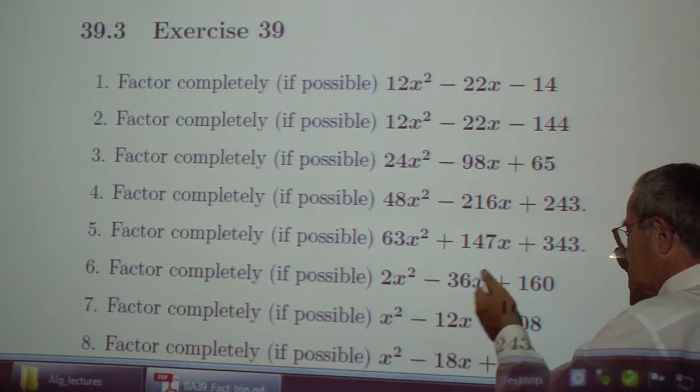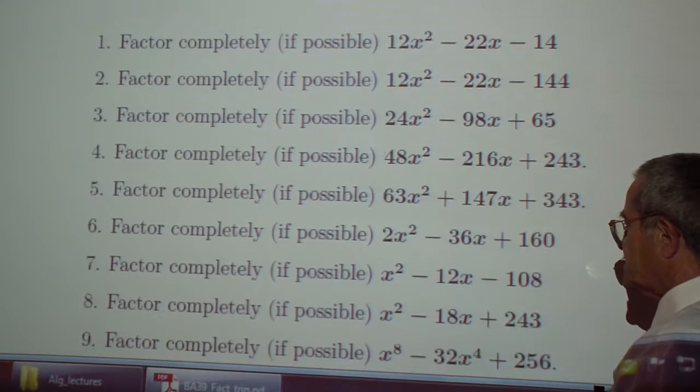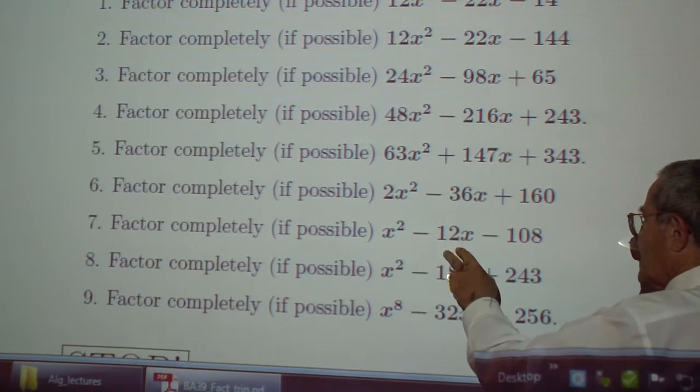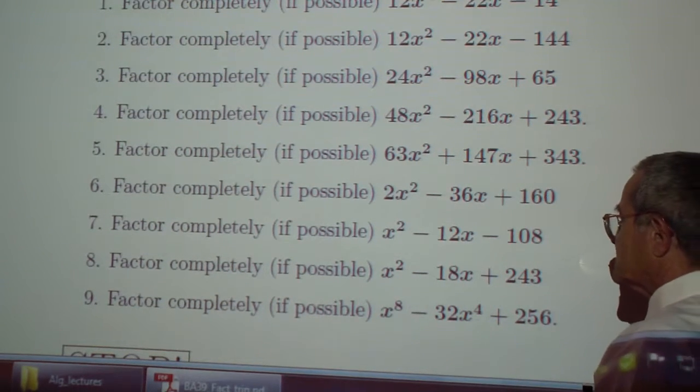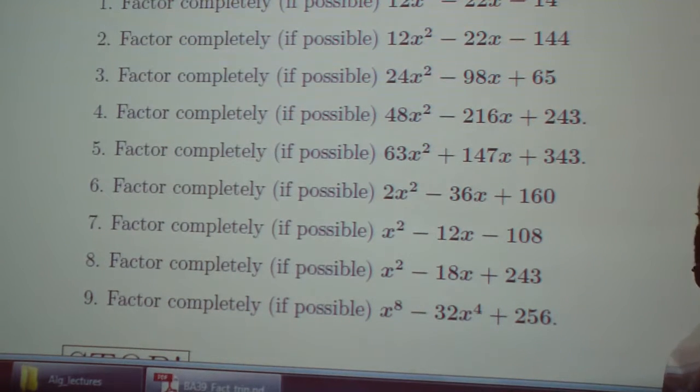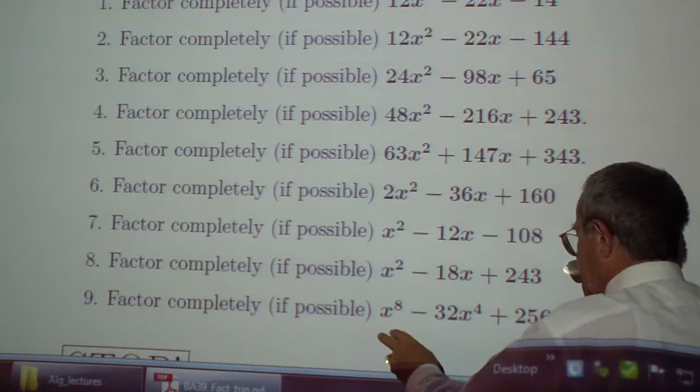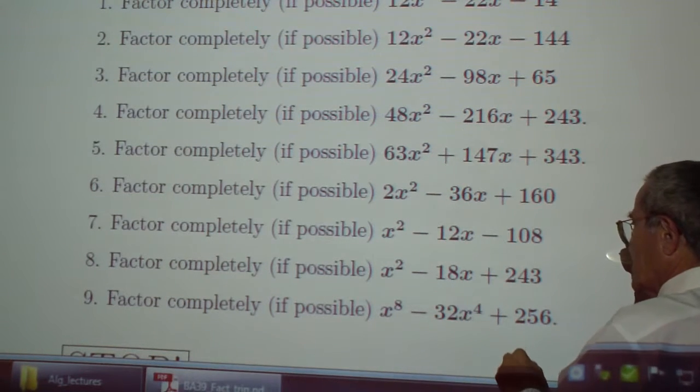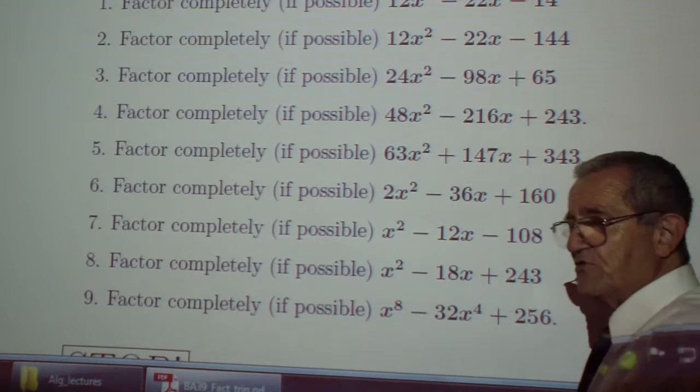2x squared minus 36x plus 160. 64x squared minus 12x minus 108. x squared minus 18x plus 243. x to the 8 minus 32x to the 4 plus 256.